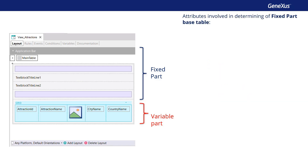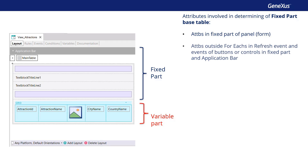To determine the base table of the fixed part, the attributes that belong to the fixed part of the form and the attributes that belong to the events associated with the fixed part will be taken into account, as long as these attributes are outside of for each commands. These events are the refresh event and the events associated with buttons or controls of the fixed part, including those of the application bar. In addition, the attributes of the conditions tab of the panel object must also be taken into account to determine the base table of the fixed part.